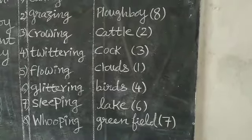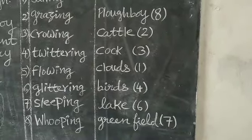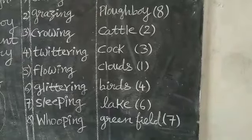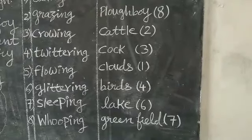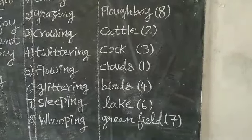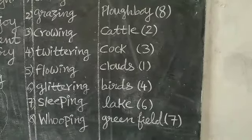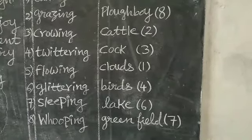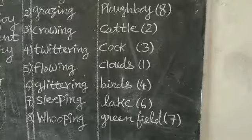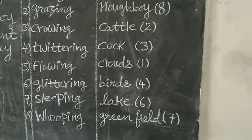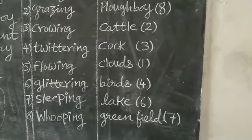The seventh one is 'sleeping.' In the poem, the poet describes the green field as sleeping during the daytime, meaning it looks so beautiful. So the answer for the seventh one, sleeping, is 'green field.' You can see where green field is on the B side — I have put number 7 there.